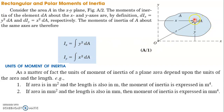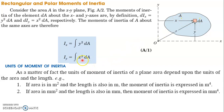The area of the small section is dA, and the distance from the x-axis is y, so y² · dA gives the moment of inertia of the small section. To calculate the moment of inertia of the whole section, we integrate: IXX = ∫y² dA. Similarly, the moment of inertia with respect to the y-axis is IYY = ∫x² dA, where x is the distance from the y-axis.